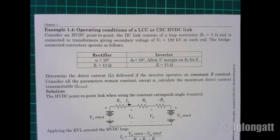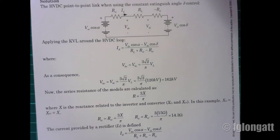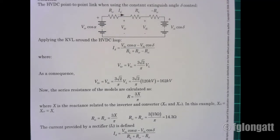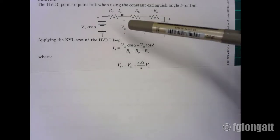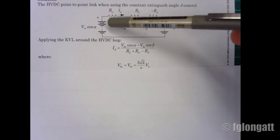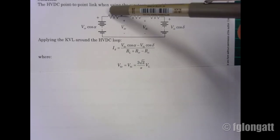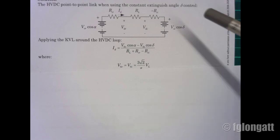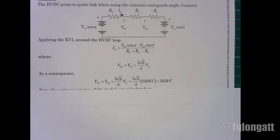Now the job is straightforward. We apply Kirchhoff's Voltage Law: this voltage minus this voltage equals the voltage drop across R_L, plus the voltage drop across R_co, plus the voltage drop multiplied by minus one — which is the voltage across the commutation reactance of the inverter.